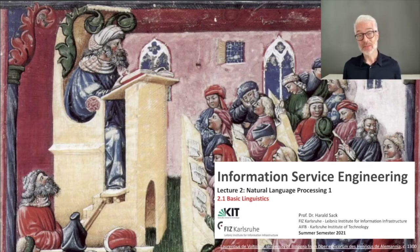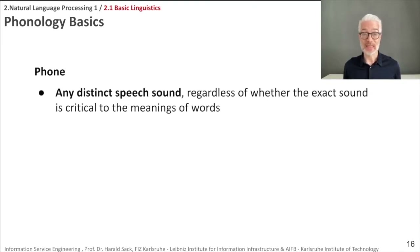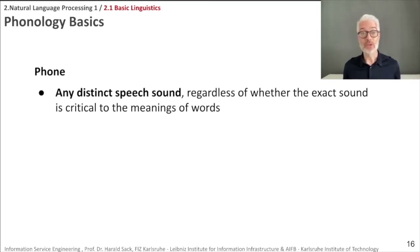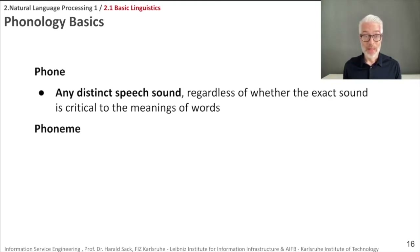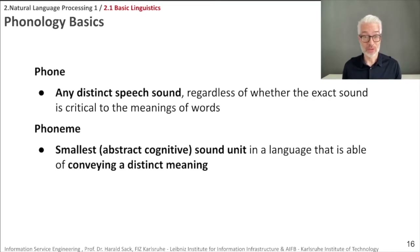Talking about linguistics, we want to think about what are the constituents of a language that transport meaning. The smallest unit we will find are the so-called phones — these are distinct speech sounds, any speech sound regardless of whether it carries meaning. As soon as a sound really determines the meaning of a word, it's not only a phone but a so-called phoneme. A phoneme is the smallest abstract cognitive unit of sound in a language that is able to convey a distinct meaning. In English, you distinguish around 42 phonemes — vowels, consonants, semi-vowels, diphthongs — 42 overall.